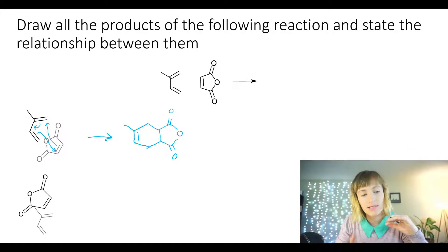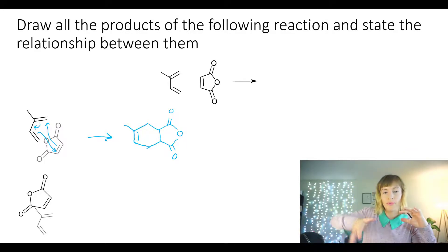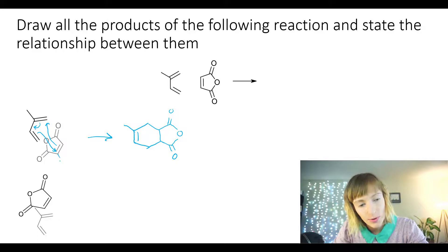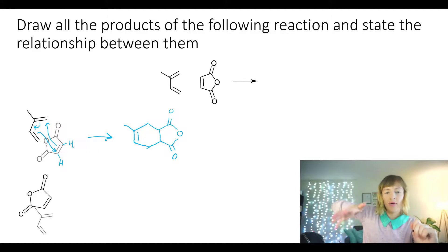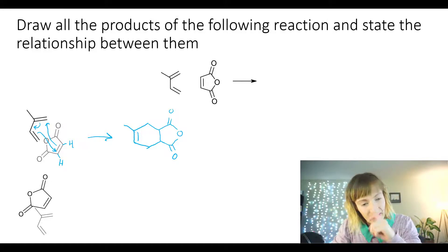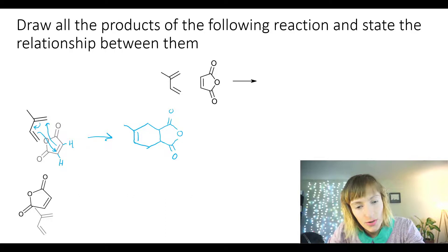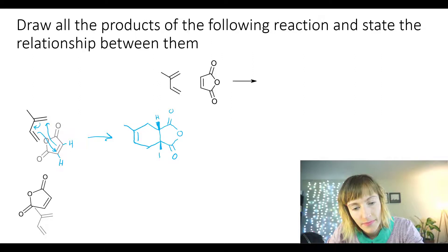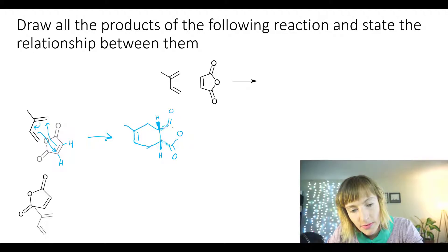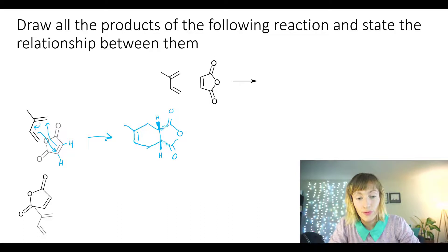In this scenario, since the maleic anhydride was on the bottom and it flipped upwards, that means that the protons in these positions went up as the maleic anhydride was turning over. So in the product structure, these protons are going to be facing upwards — you can think of these bonds as going into the back of the page. So that's our first isomer.